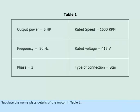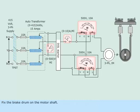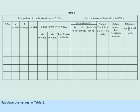Tabulate the nameplate details of the motor in Table 1. Make the connections to the motor as per the circuit shown above. Fix the brake drum on the motor shaft. Measure the radius of the brake drum and the thickness of the belt. Tabulate the values in Table 2.